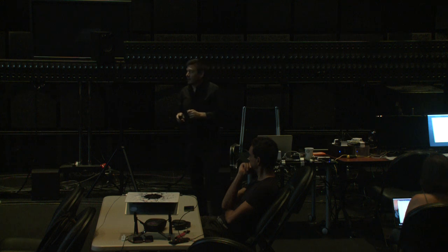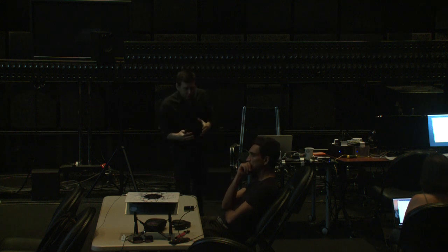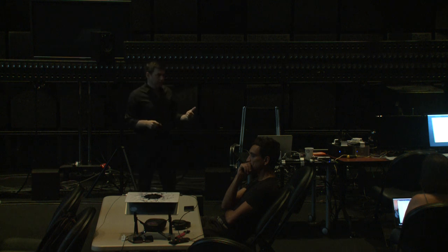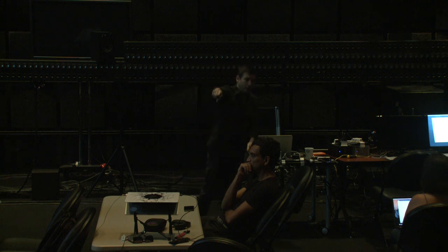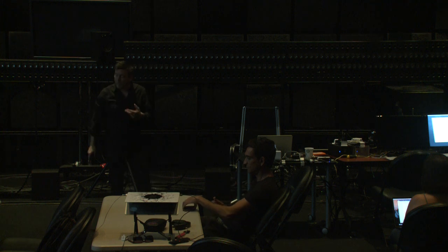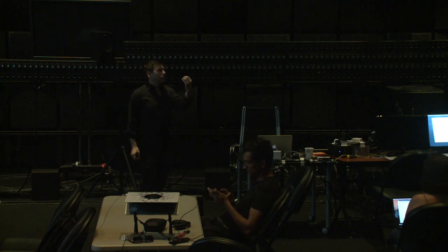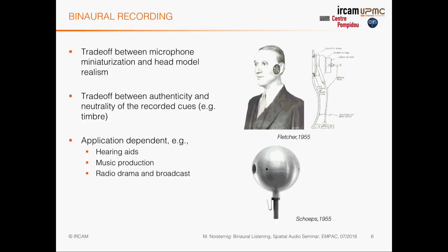The main goals of binaural sound reproduction are: stable localization, eliminating front-back ambiguities (the cone of confusion), and achieving good out-of-head localization. You can learn to listen with somebody else's ears — auditory localization is really adaptable. So let's look at some binaural recordings. Fletcher in 1955 had ideas resembling what we now call cochlear implants for hearing-impaired people, and also conceived the idea of a dummy head.